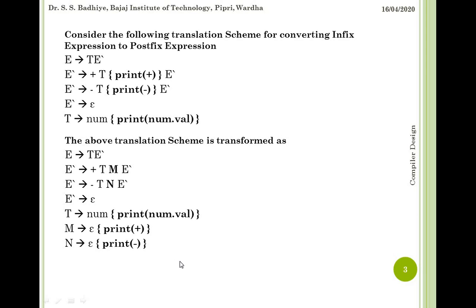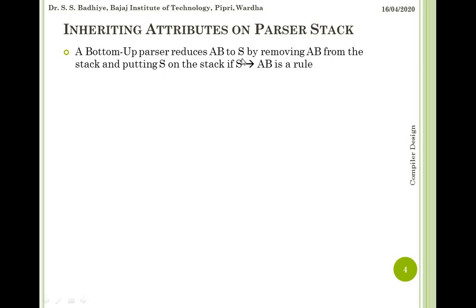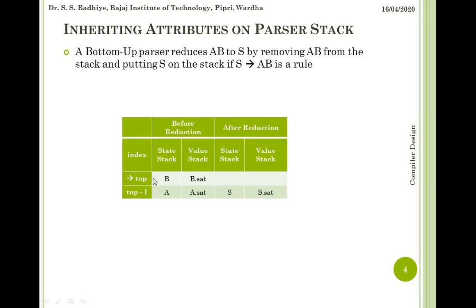A bottom-up parser can thus be created for this grammar as all rules look like synthesized attributes. Now, how are inherited attributes used on parser stacks? Suppose a bottom-up parser with synthesized attributes is used and consider a production rule S derives to AB. When AB is to be reduced to S, we pop AB from the stack, push S onto the stack, and compute the synthesized attribute of S from the already-present synthesized attributes of A and B on the value stack.